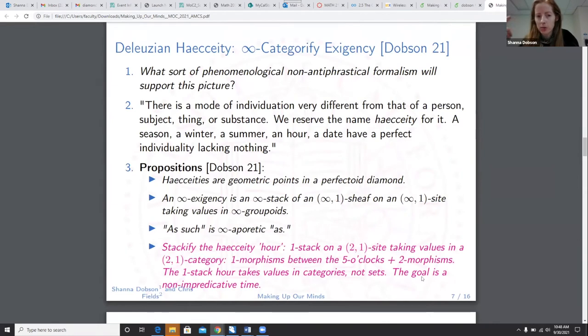So we bring in Deleuze for help in an infinity categorical exigency that I've sort of proposed. We say, what sort of phenomenological, non-antiphrastical formalism would actually support this sort of radical picture? Well, Deleuze defines haecceity. There's a mode of individuation very different from that of a person, subject, thing, or substance. Reserve the name haecceity for it. A season, a winter, a summer, an hour, a date, have a perfect individuality, lacking nothing. A couple of propositions that I've said that haecceities are geometric points in a perfected diamond, a highly complex object. I'm about to define an infinity exigency.